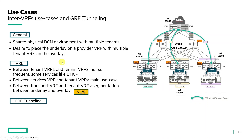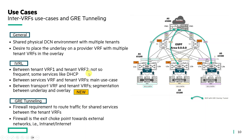The use cases for leaking routes between VRFs include shared services like DHCP or NTP. For this feature, IVRL is used to leak the tunnel destinations and next hops from the transport VRFs into the tenant VRFs. GRE tunneling applies when there's a firewall requirement to route traffic for shared services between VRFs, or when the firewall is the main exit choke point toward external networks such as the internet.